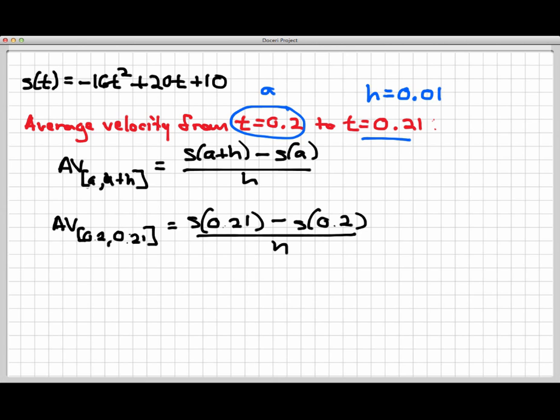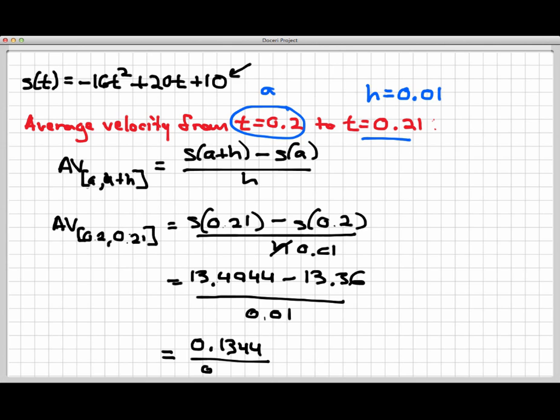I've gone up to the side here and cooked up the numbers for the numerator here. You can do that and should do that on your own. Just use the formula up here at the top with the particular values. S of 0.21 is 13.4944, and we already knew from a previous calculation that s of 0.2 is 13.36. And this is all going to be divided by h, which is 0.01. Now let's just calculate the subtraction problem in the numerator, and that comes out to be 0.1344, and this is divided by 0.01. And so that gives us an average velocity on this time interval of 13.44 feet per second.